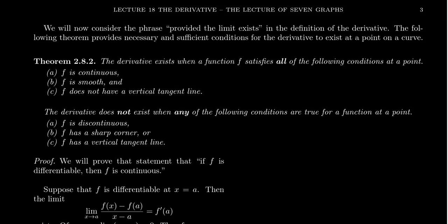In the original definition of the derivative, we defined it as a limit of difference quotients. Because the derivative is defined with respect to a limit, there's the possibility that that limit doesn't exist. If the limit doesn't exist, then the derivative is undefined — the derivative doesn't exist.